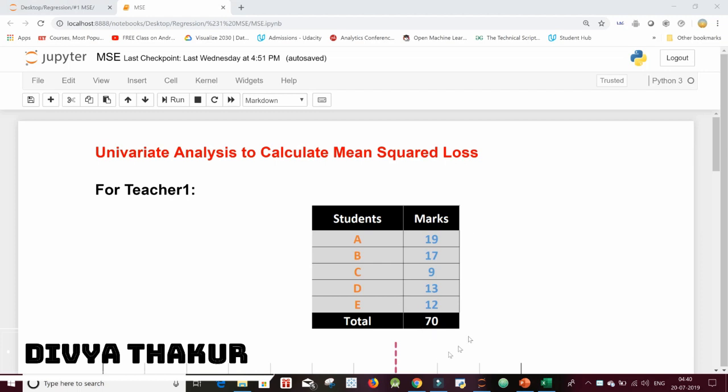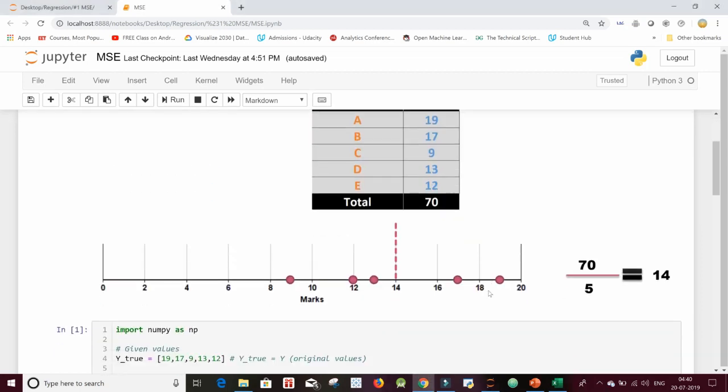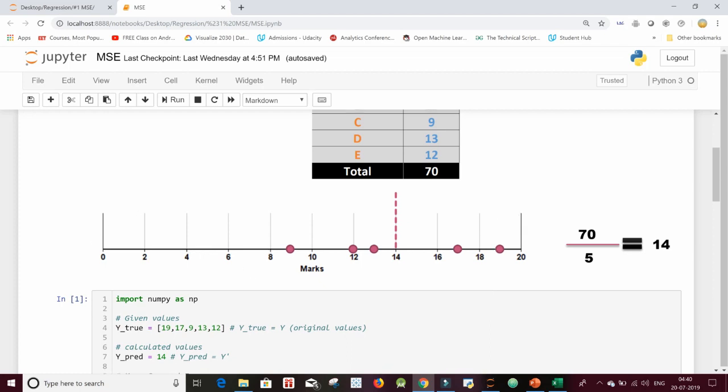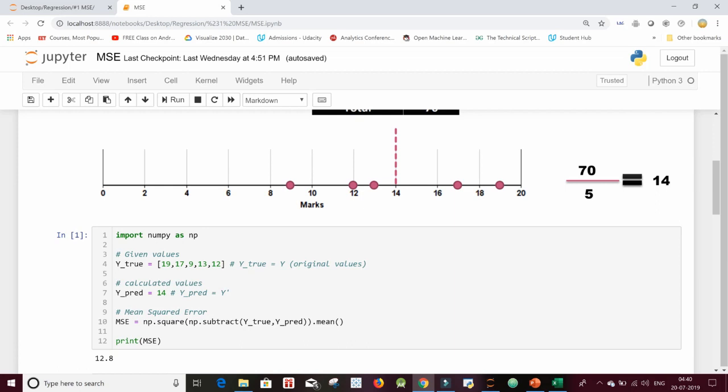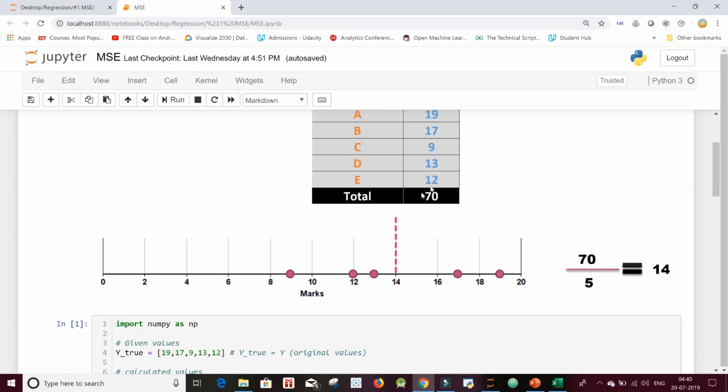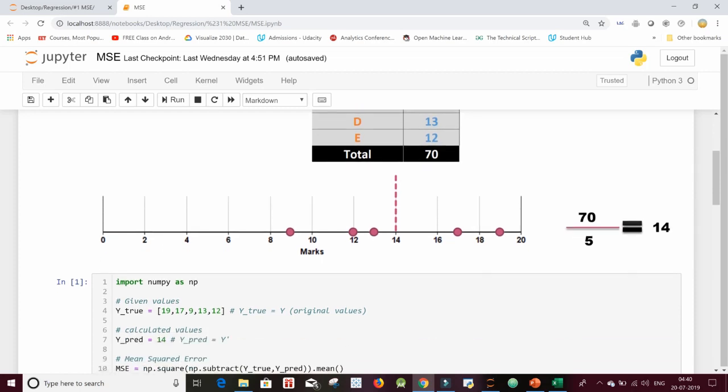That is, we are having only one variable, which is marks for each of the student, and then we are predicting the mean squared loss. So for teacher 1, this is the table of students with marks, and this is the number line that the principal had plotted. So using numpy, I have formed a list of the given values, which is 19, 17, 9, 13, 12, the marks of the pupils.